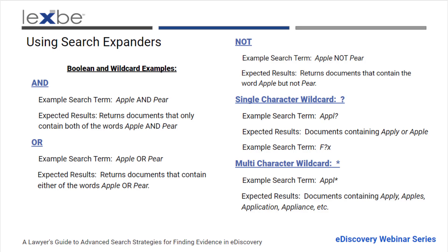The multi-character wildcard helps with different tenses and conjugation. And if you're looking for 'contract,' 'construct,' or anything like that, anything that starts with those same letters will return results for you to look over and see if you care about them.